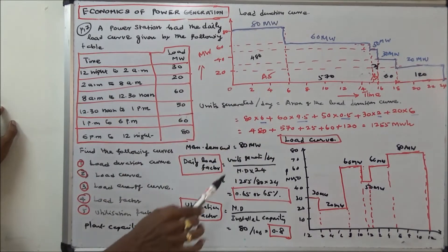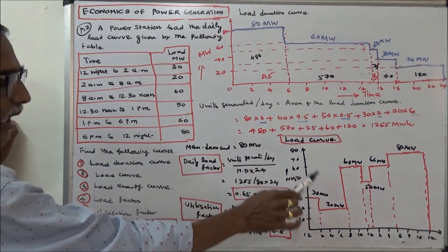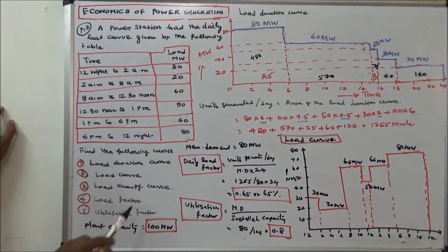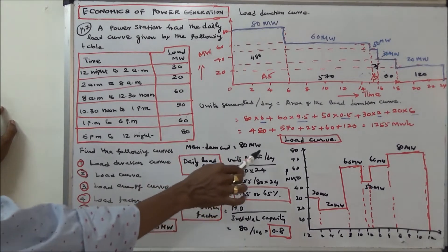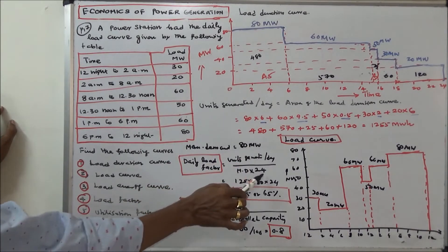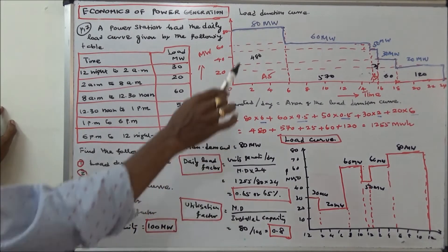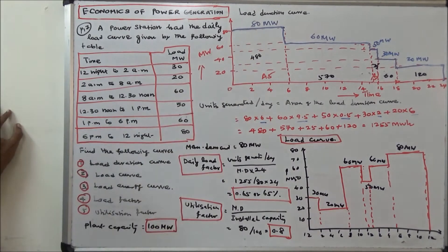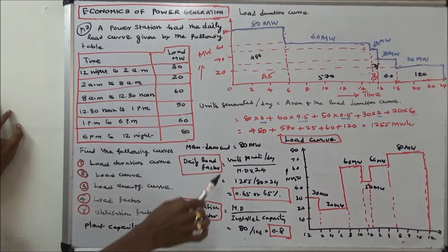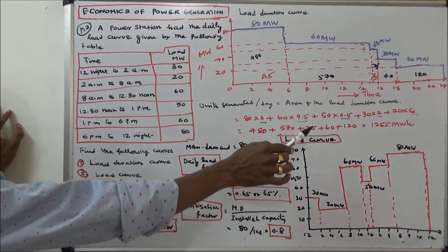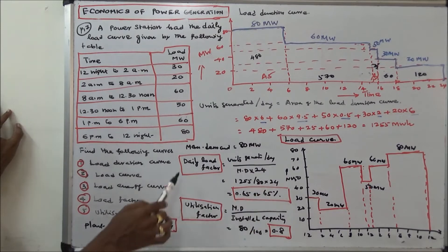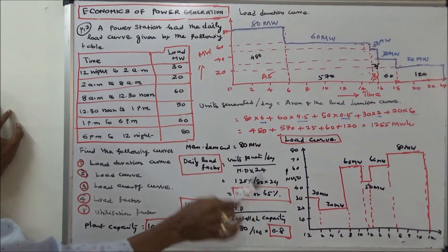Next we draw the load curve. The next question is to calculate the load factor. Daily load factor equals units generated per day divided by maximum demand times 24. From the load duration curve, the maximum demand is 80 megawatts. Units generated per day is 1255 divided by 80 times 24. Daily load factor equals 0.65, or 65%.